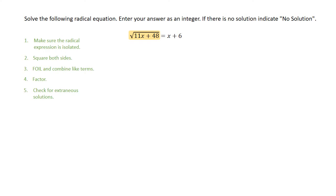We can start by squaring both sides. So we'll take the original equation and square both sides. This allows us to drop the radical on the left-hand side, and it will have us foil the x plus 6 expression on the right-hand side.